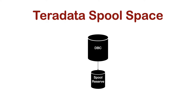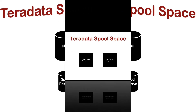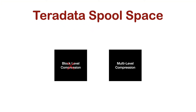Teradata never simultaneously holds permanent data and Spool Space on the same cylinder. Therefore, cylinders are released immediately when Teradata no longer needs them as Spool Space to make them available for other purposes. On older Teradata systems, block-level compression may not be enabled, but multi-value compression is also an option to free up space.